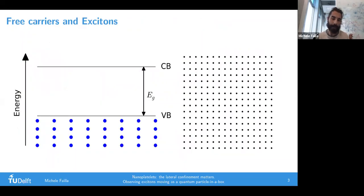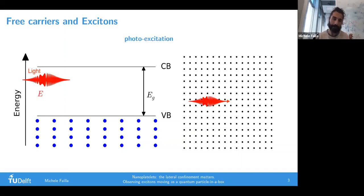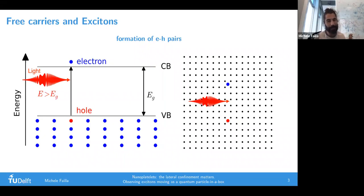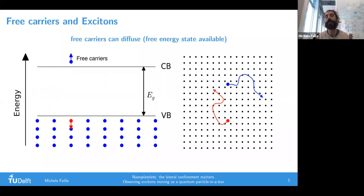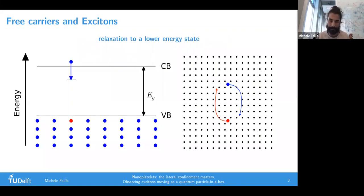Let's give an introduction to what free carriers and excitons are. On the left side is a simple scheme of valence and conduction band. The blue dots stand for electrons. Now I'm shining light on my semiconductor and assuming this light has an energy higher than the band gap energy. This causes the electron to be promoted towards the conduction band, leaving behind a hole, which is an ionized atom. Both the electron and hole can move, diffuse within the crystal, and eventually find each other because they have opposite charge. They bind together because of the Coulomb interaction, minimizing the energy of the system, and you create an exciton.